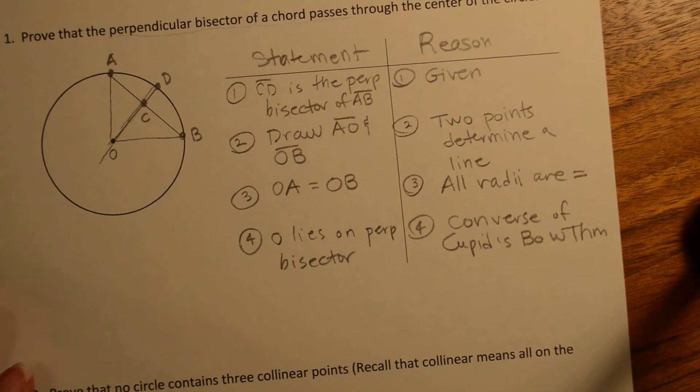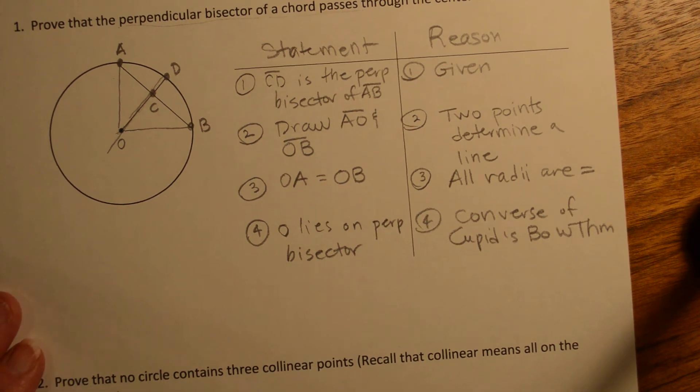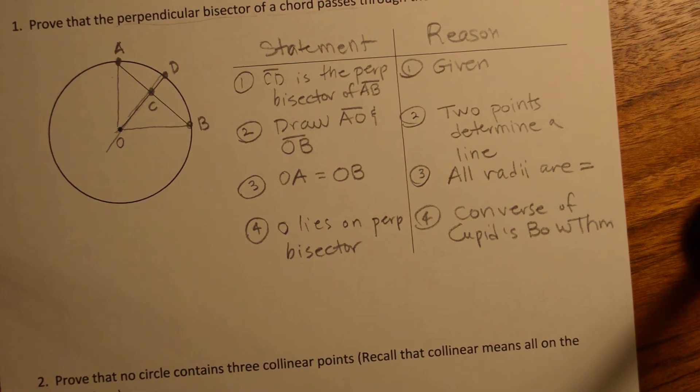And so we could say Converse of Cupid's Bow Theorem, or you could write out Cupid's Bow Theorem which says, if any point is equidistant from the endpoints of a segment, then it must lie on the perpendicular bisector. Fred wrote that out for you in his proof right there. I'm not going to do that just because it takes too long. Oh, and I'm realizing now it says that, that it's Converse of Cupid's Bow. Okay, that is problem one.